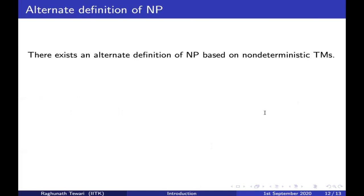We started by defining polynomial time P in terms of deterministic Turing machines, and defined NP in terms of the certificate-verifier model. But there is another definition of NP — in fact, the name NP stands for non-deterministic polynomial time — based on non-deterministic Turing machines.